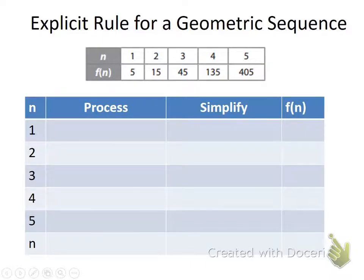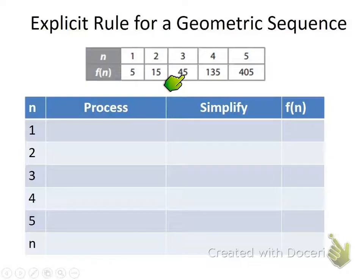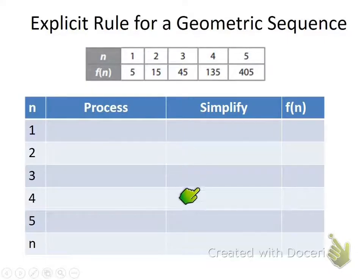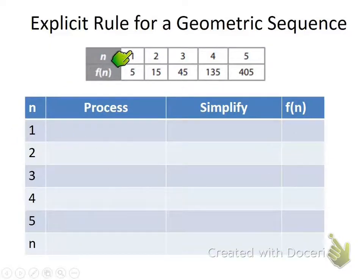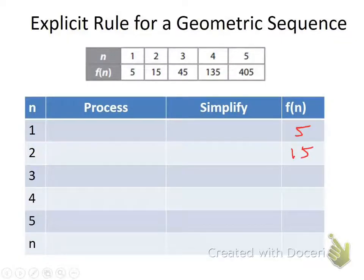I've got the same sequence written in table form showing the position in the sequence. The first term is 5, the second term is 15, the third term is 45, and so on. We're going to fill out this table and see patterns that help us realize what our rule is. The right column fills in as: 5, 15, 45, 135.